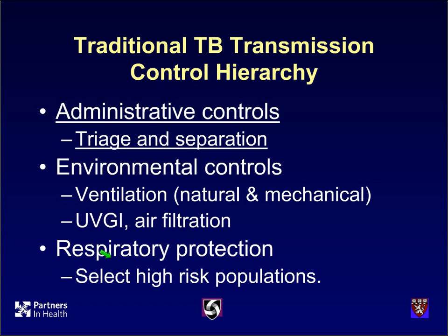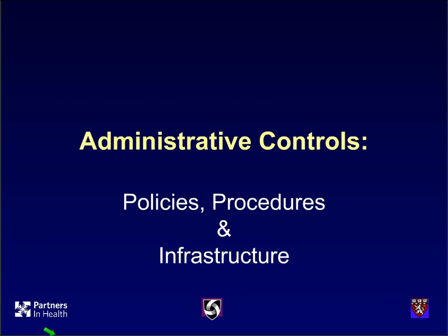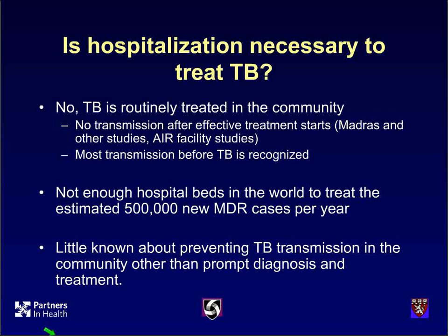We'll go back to administrative controls in particular — the implications for infrastructure. First, is a hospital necessary to treat TB? The answer is unequivocally no. Many TB patients are treated in the community, and it presents fewer problems than trying to keep patients in the hospital with tuberculosis. For MDR-TB, that seems particularly true. There are an estimated 500,000 new MDR-TB cases per year, and there just aren't enough hospital beds globally to keep people hospitalized even for six months of supervised therapy.